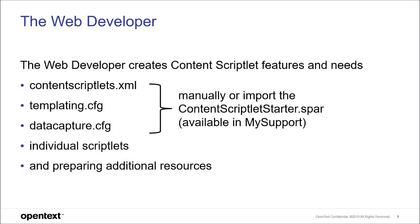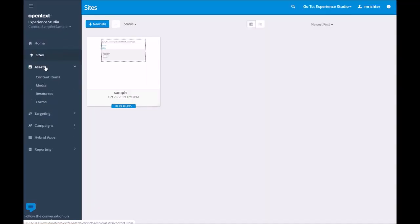The recommended and easiest way to get the Content Scriptlets XML and the other settings files into your system is to import the Content Scriptlets starter.spar file, which is available in MySupport. In addition to these configuration files, the web developer needs to provide the scriptlets themselves. The starter.spar file also comes with a simple scriptlet so that it is easy to start with.